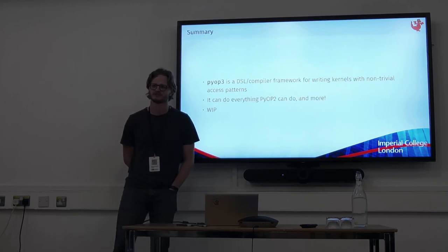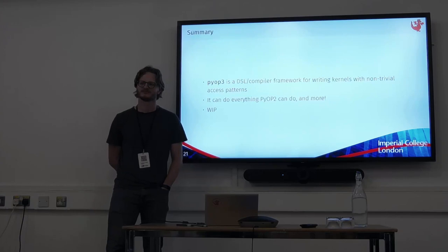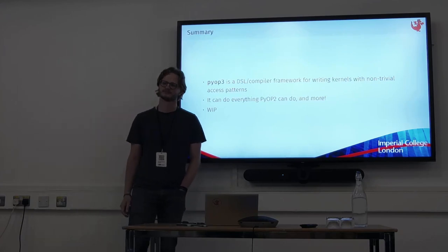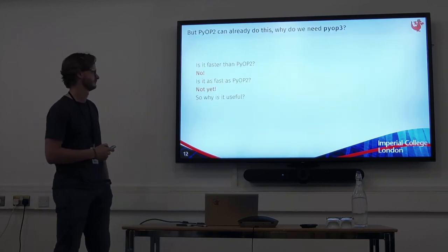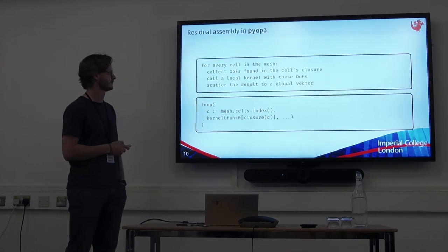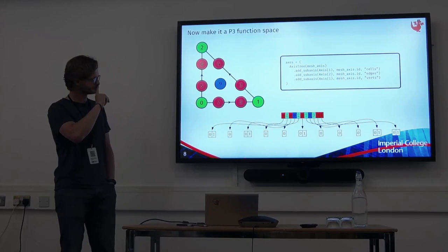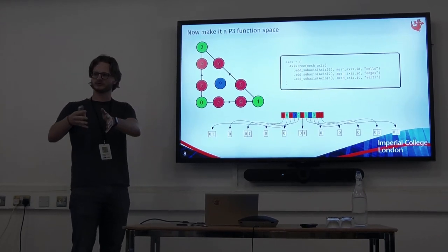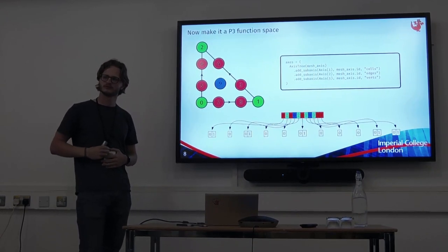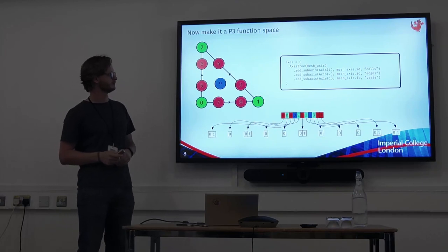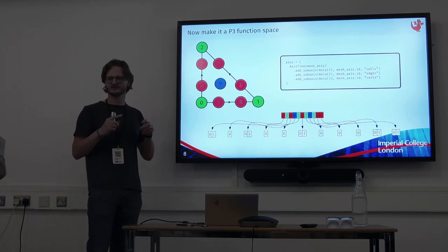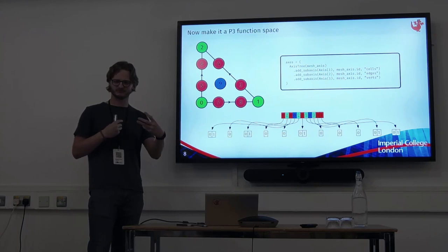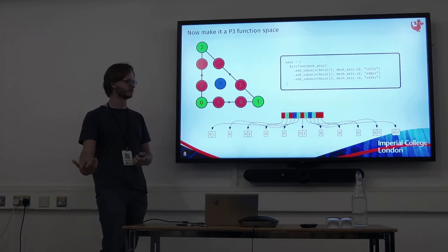Q: That was really cool. When attaching degrees of freedom to your mesh axis, can you attach different numbers of degrees of freedom to each entity individually? A: Yes. So some cells get three, some cells get four, or one edge gets three and the others get two. That would fall into a ragged data layer. You can distinguish — it's either a ragged thing, which is more dynamic at run time and requires a lookup, or it can be compile-time known.